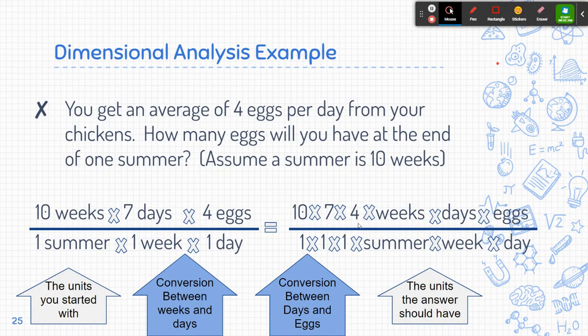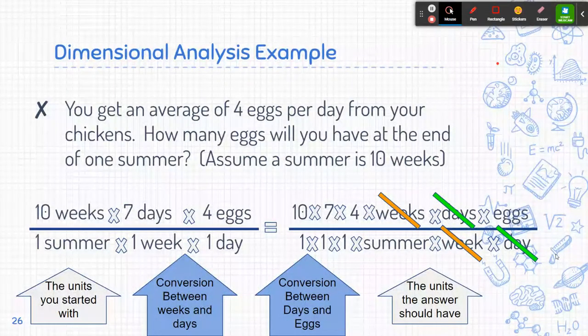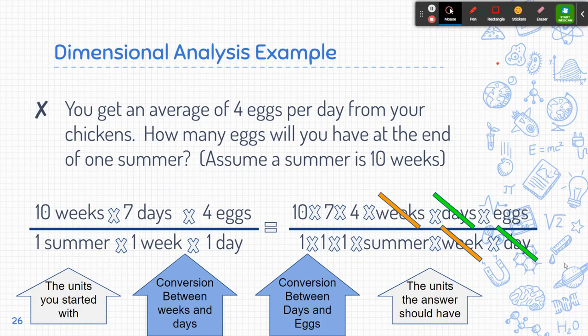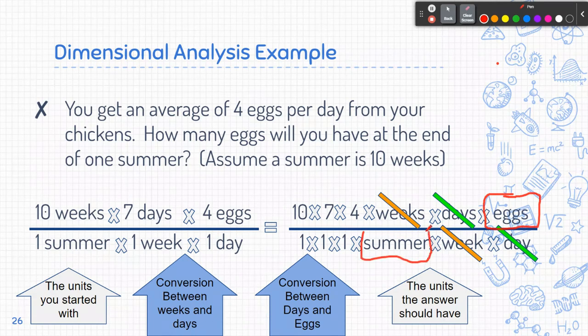So I'm going to end up with 10 times 7 times 4. And then on the bottom, 1 times 1 times 1. Okay, so that'll just be 1. And then my weeks, I have weeks on top and a week on bottom, those will cancel out. And then my days on top and day on the bottom will also cancel out. You don't have to worry about it being plural versus not plural. They're the same thing. And what you're going to notice here is that I'm going to be left with eggs on top and summer on the bottom.